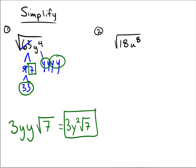To see it one more time, let's take 18u to the 8th under a radical. Now 18 is 6 times 3, and 6 is 2 times 3.